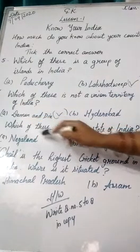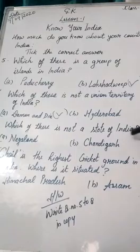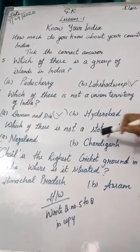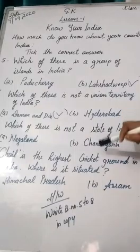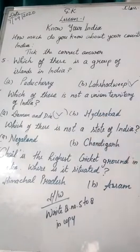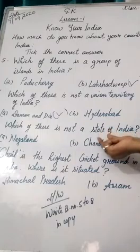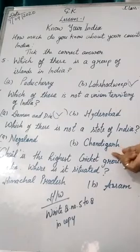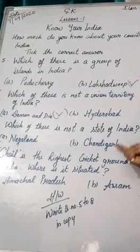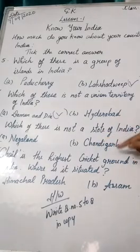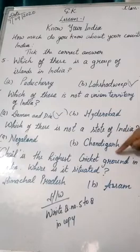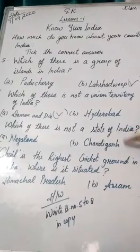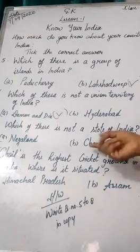Question number 7: Which of these is not a state of India? The options include Nagaland and Chandigarh. Chandigarh is our union territory, not a state. It is the capital of two states — Punjab and Haryana.